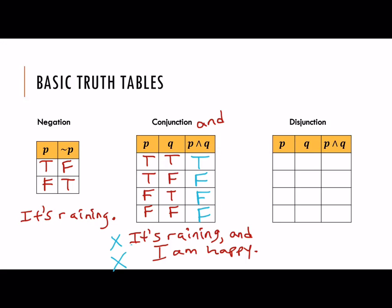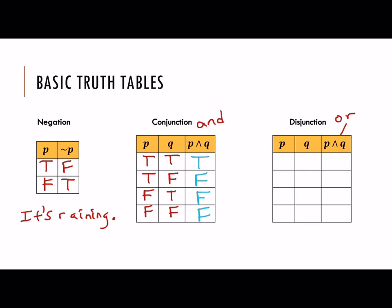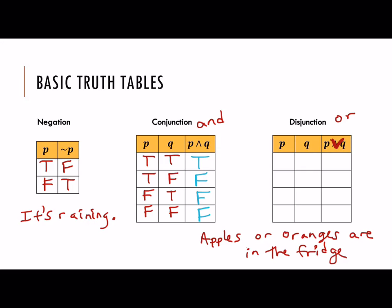Now let's look at a disjunction — these are the OR statements. Here's the symbol for OR. I should note there's a typo in the chart I copied — that should be an upside-down symbol. The one that looks like a capital A is for AND, and the other one is for OR. So for an OR statement, let's say 'apples are in the fridge or oranges are in the fridge.' The P part would be that apples are in the fridge, and Q would be that oranges are in the fridge.